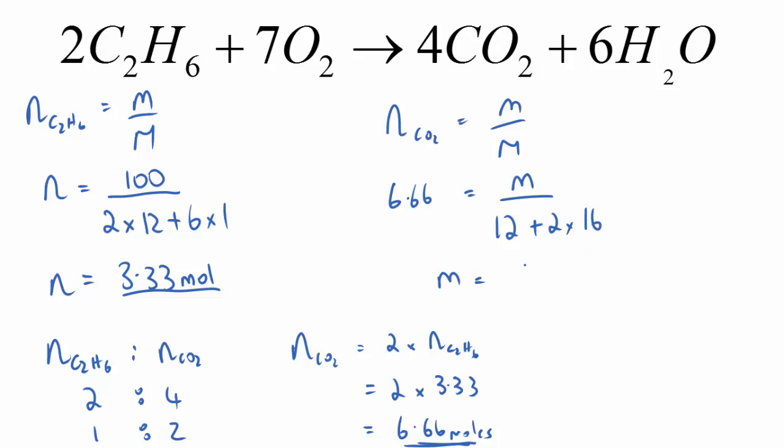So using a little bit of algebra, we're going to multiply that out. We've got the 6.66 by the molar mass. And that gives us our mass of carbon dioxide, using that subscript there, just to let the person who's marking it know what it is. That's about 293 grams.